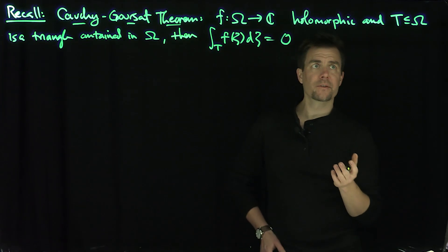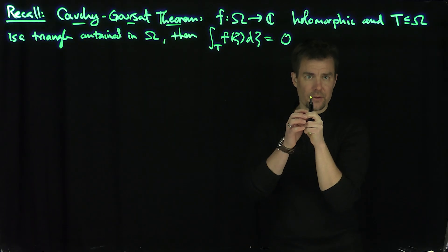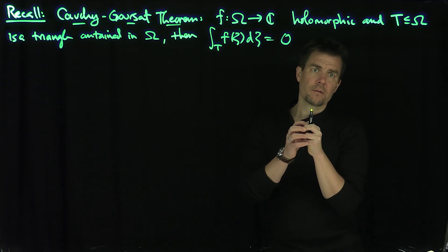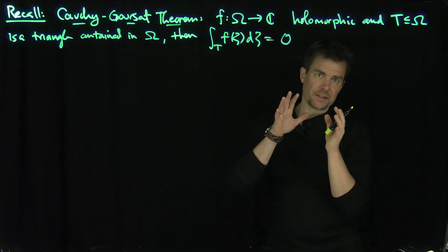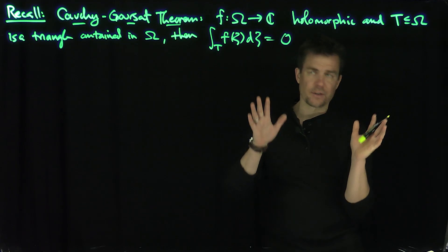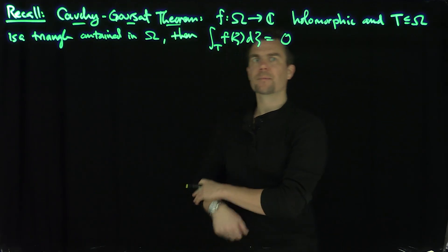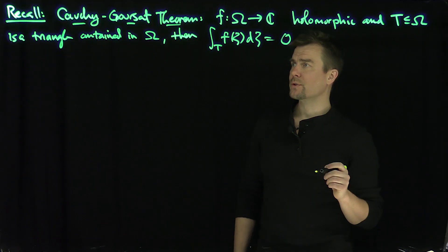So we know that if I give you a holomorphic function and a triangle that's contained inside the region of holomorphicity, then if I integrate over that triangle with respect to dζ, that has to vanish. The integral of f has to vanish on that set. It's a very, very useful result.